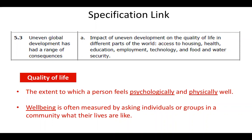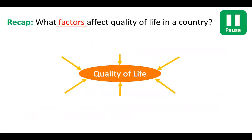We can measure quality of life by looking at different factors in the specification. Let's have a recap of what we learned in the last video: what factors affect quality of life? Try to come up with six — these will be different categories of development. Pause the video for a couple of minutes, write down as many as you can think of, and then let's look at your answers.